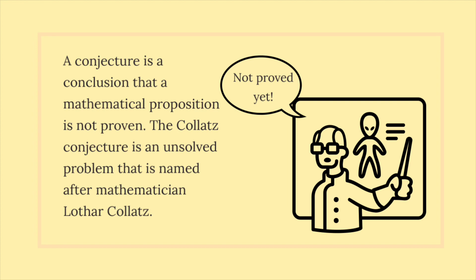A conjecture is a conclusion that a mathematical proposition is not proven. The Collatz Conjecture is an unsolved problem that is named after mathematician Lothar Collatz.